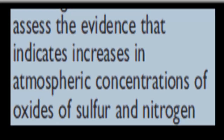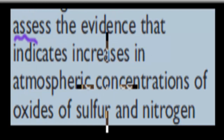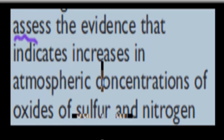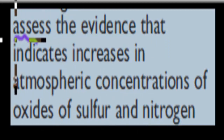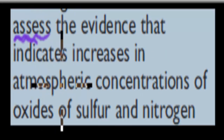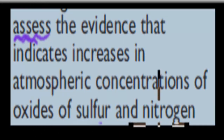Welcome back. In the last video, we looked at some of the actual reactions that produce both sulfur dioxide and nitrogen oxides, and looked at some of the chemical equations for those reactions as well. In this video, we're going to cover the next dot point, which says: assess the evidence that indicates an increase in atmospheric concentrations of oxides of sulfur and nitrogen. So we have to look at the evidence and say yes or no — is there an increase in the concentration of the oxides of both sulfur and nitrogen.